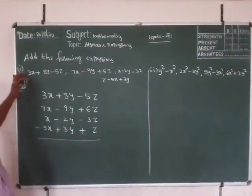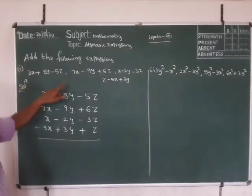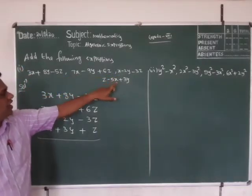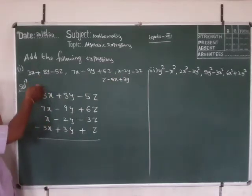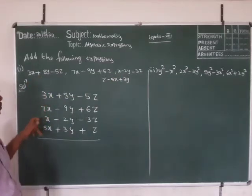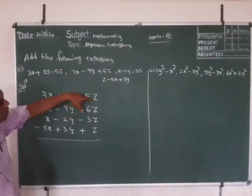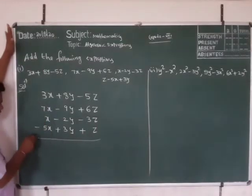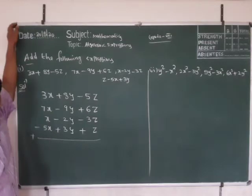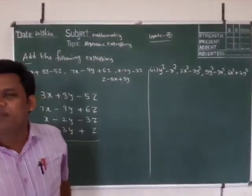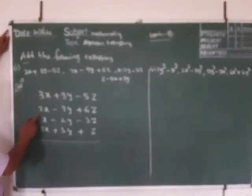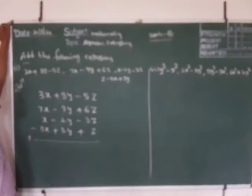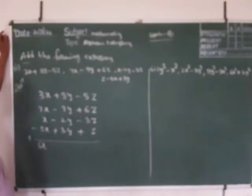You have to observe here: like terms — x, x, x, and x — move together. Similarly y terms, similarly z terms. That you have to observe. So 3x plus 7x — we want addition, we are using column method. 3x plus 7x is 10x, 10x plus x is 11x, 11x minus 5x means 6x.